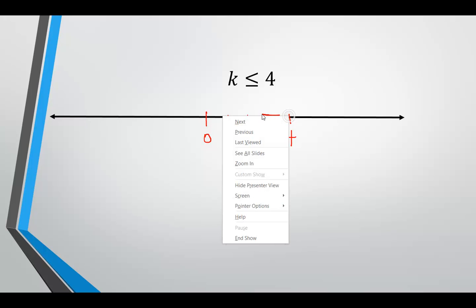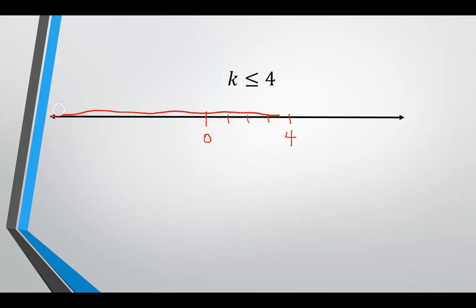If we want k less than or equal to 4, we need k to be all to the left of 4, going on forever to the left, to the negative. At 4, it could be equal to 4 because 4 is less than or equal to 4, so we'll put the bracket at 4.